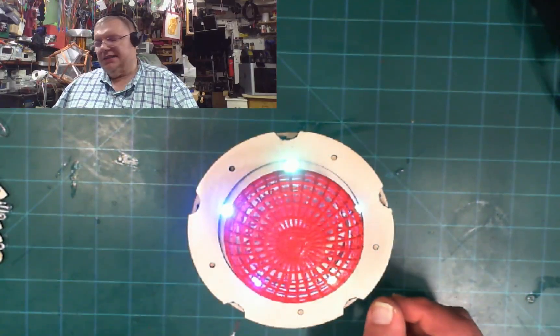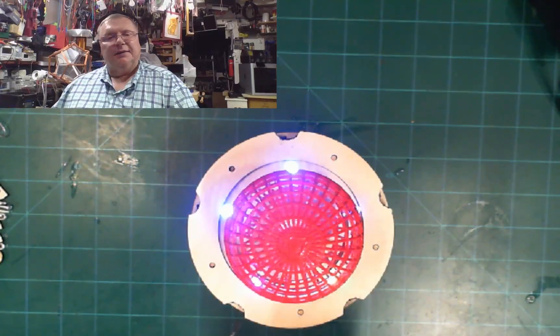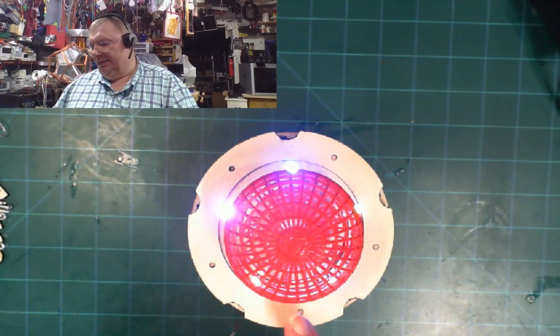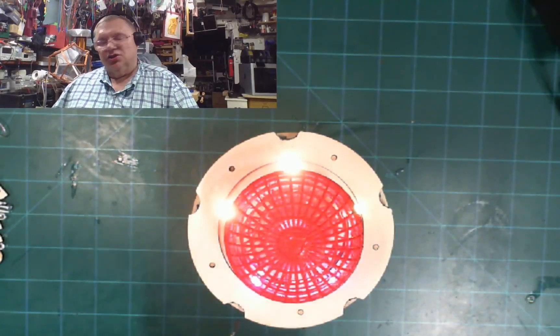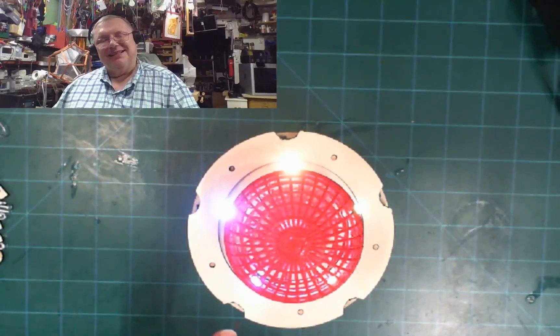So I figured I'm gonna light it up and put a white LED in the middle, and then I put these color-changing LEDs. Maybe it's not showing very well on the camera, but that's all I can do.